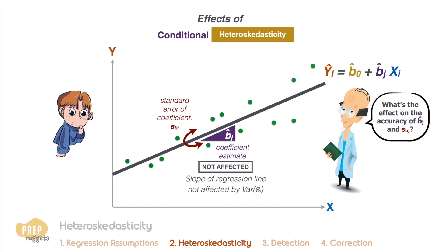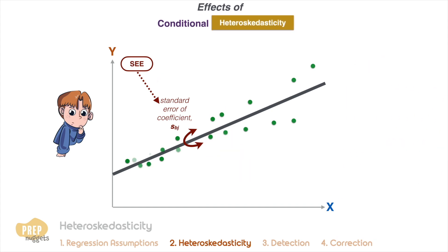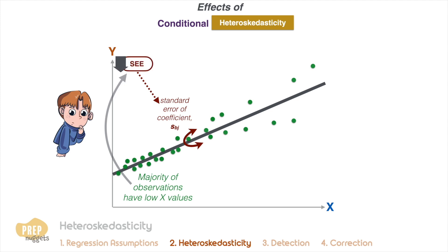However, the accuracy of the standard error of the coefficient will be affected by heteroscedasticity. You do not need to know exactly how the standard error of the coefficient is derived, but do know that it's a function of the SEE. So if the majority of the observations have a low X value, the variance of the errors may be underestimated, implying that the SEE is underestimated, which means that the standard error of the coefficient is underestimated.